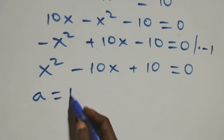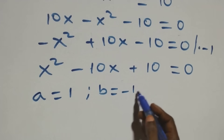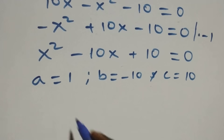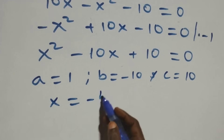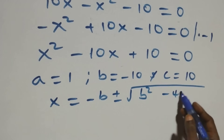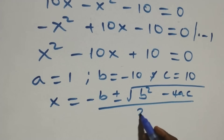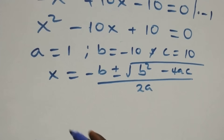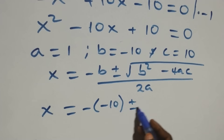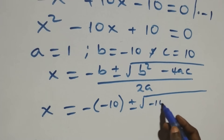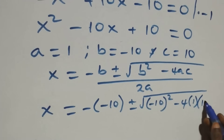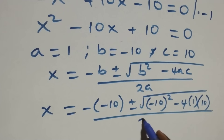Here a equals to one, b equals to minus ten, and c equals to ten. From the quadratic formula, x equals to minus b plus or minus square root of b squared minus 4ac, all over 2a. This becomes x equals to minus(minus 10) plus or minus square root of (minus 10) squared minus 4 times 1 times 10, all over 2 times 1.